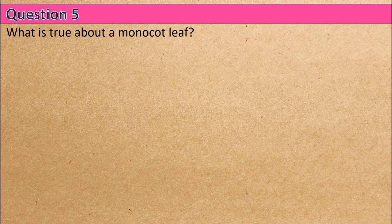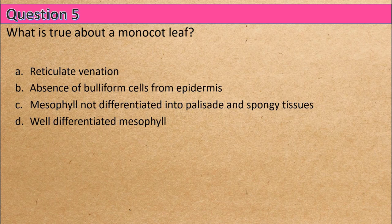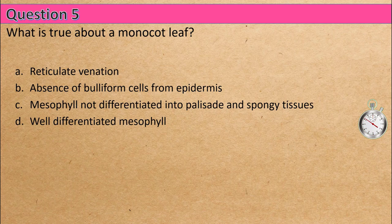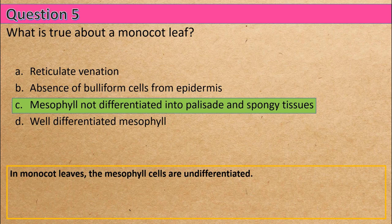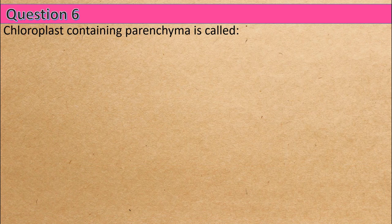Question 5: What is true about a monocot leaf? Option A: reticulate venation, Option B: absence of bulliform cells from epidermis, Option C: mesophyll not differentiated into palisade and spongy tissues, Option D: well differentiated mesophyll. The correct answer is Option C: mesophyll not differentiated into palisade and spongy tissues.